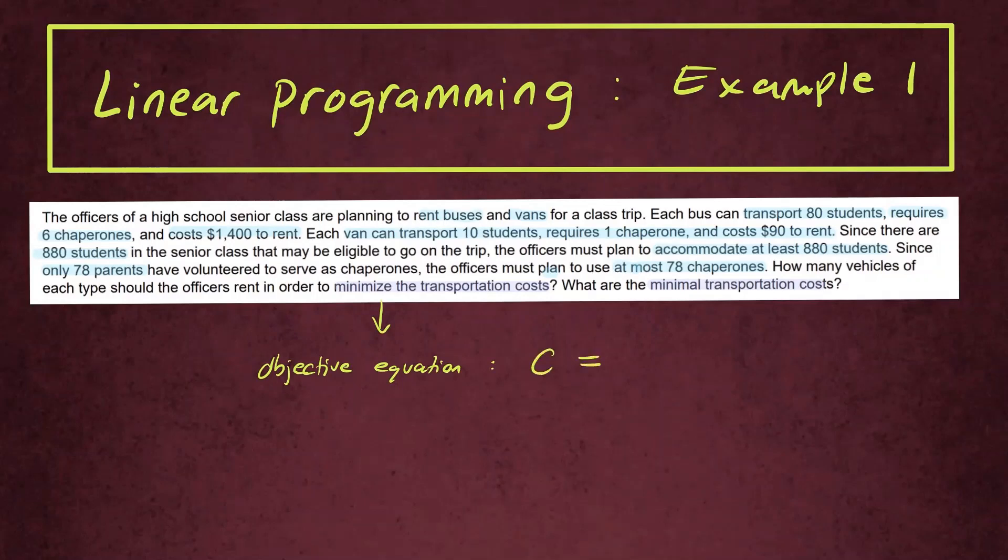Let's use some variables. Let X stand for number of buses, and we're going to use Y to stand for number of vans. And it's going to cost $1,400 to rent a bus, so that means 1400 times number of buses plus 90 times Y. So this will be the objective function.